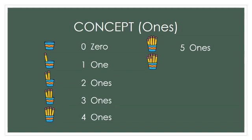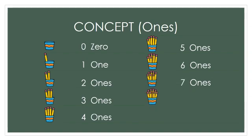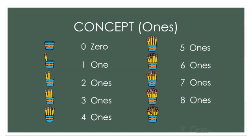This glass has 6 pencils. 6 has 6 ones. This glass has 7 pencils. 7 has 7 ones. This glass has 8 pencils. 8 has 8 ones. This glass has 9 pencils. 9 has 9 ones.